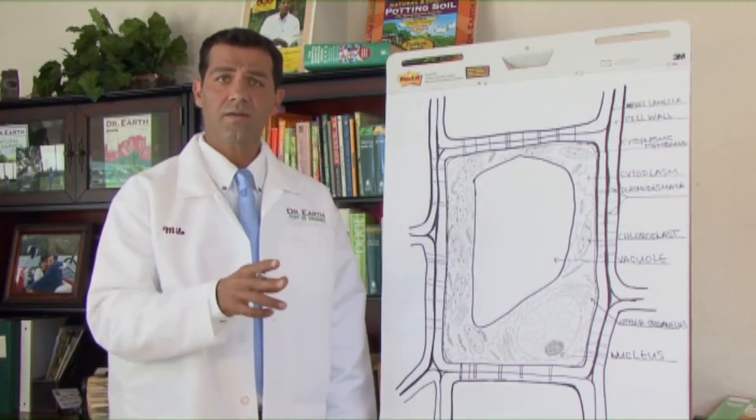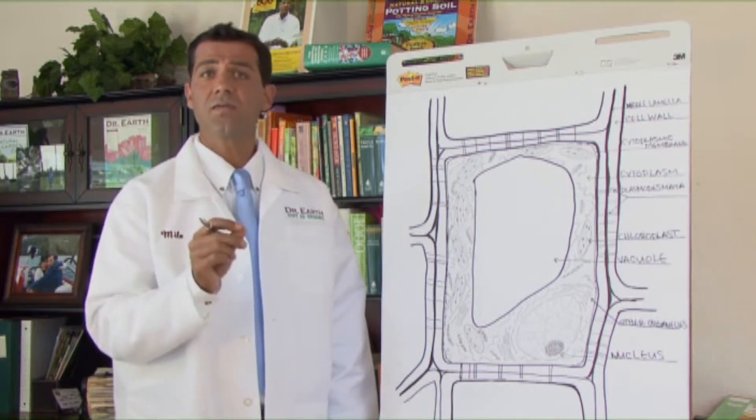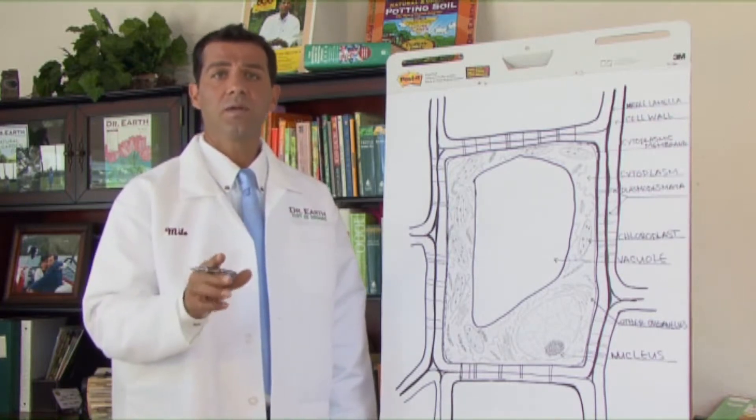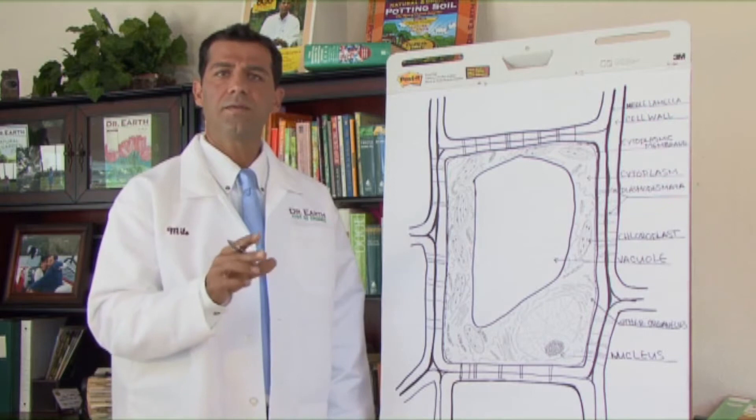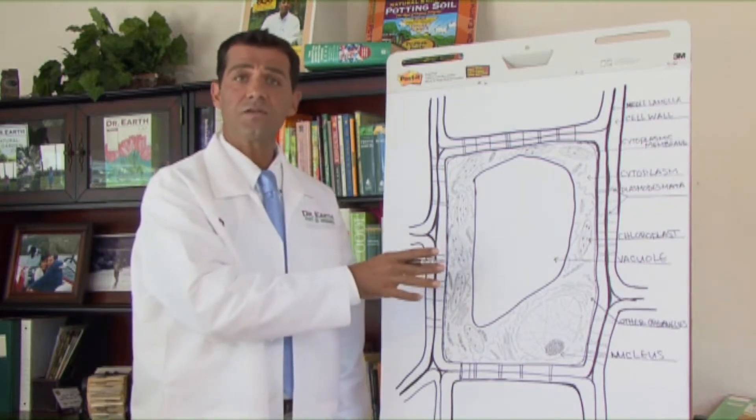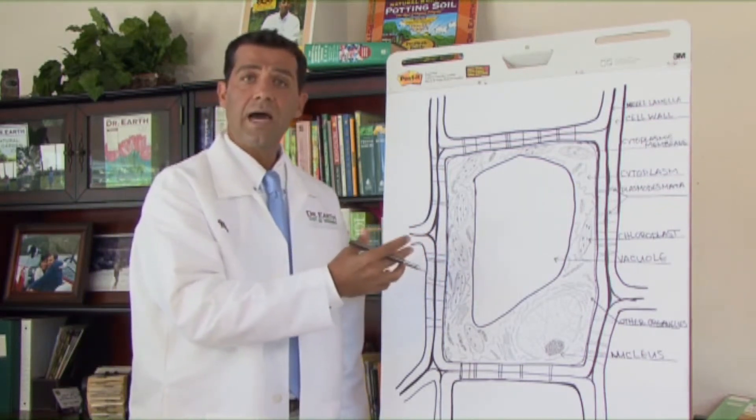When I invent a product, I want to make sure that I make it as healthy for plants as possible on the cellular level. Here's a plant cell illustration so I can demonstrate how we build healthy cells and healthy plants.